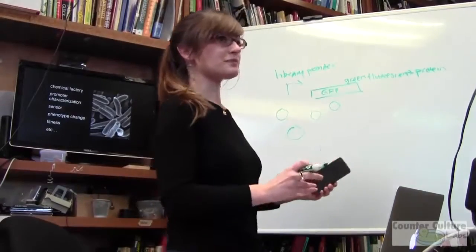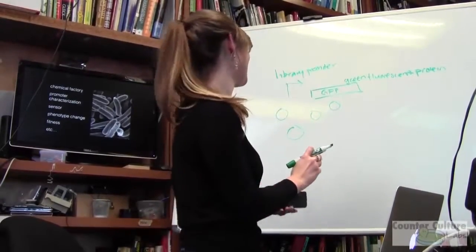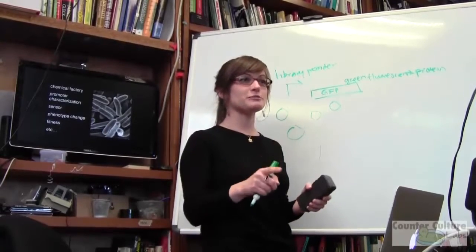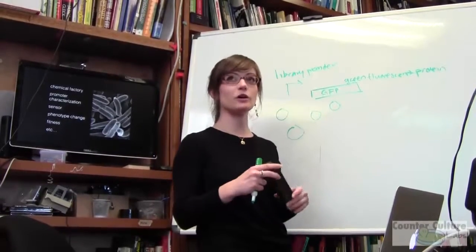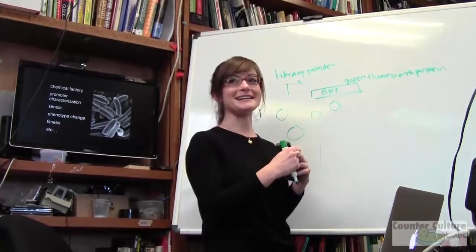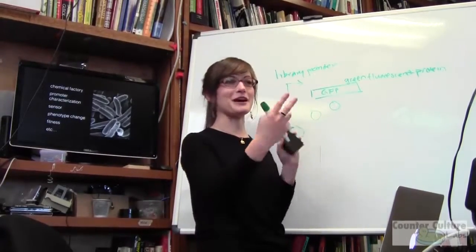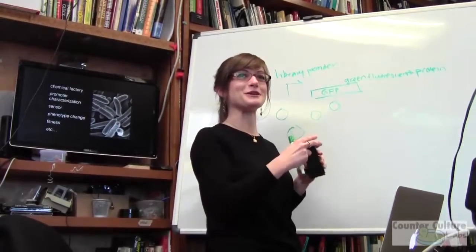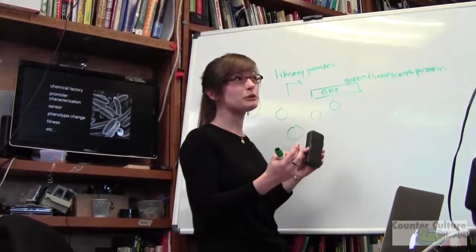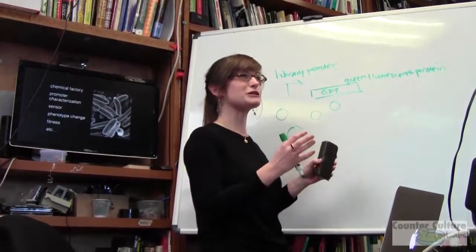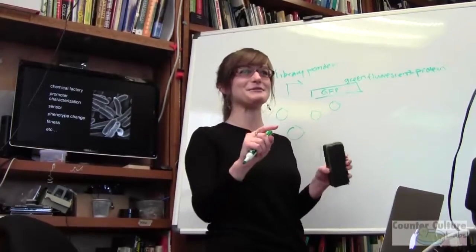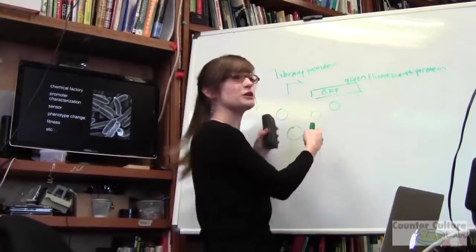How big is a promoter? It depends. Yeast promoters are large, much larger than E. coli promoters. For E. coli, there's a known stretch of sequence — the minus 35 and minus 10 upstream of a start site. The PTEP promoter is probably around 20-ish nucleotides or so. We're talking about short stretches of DNA.